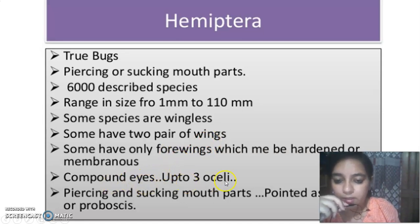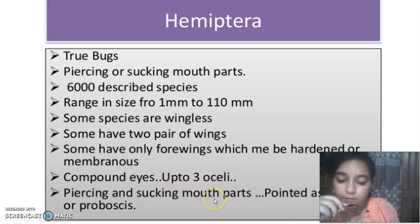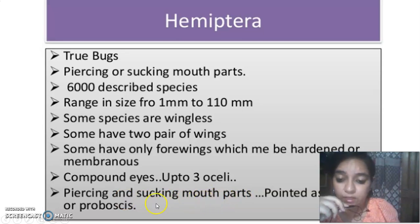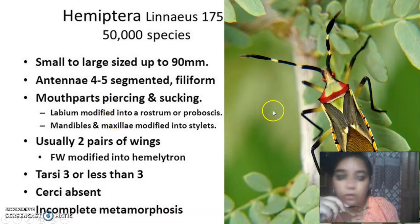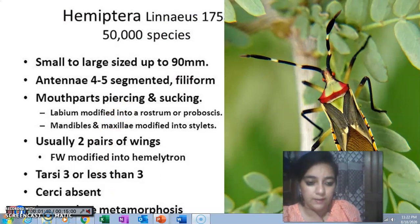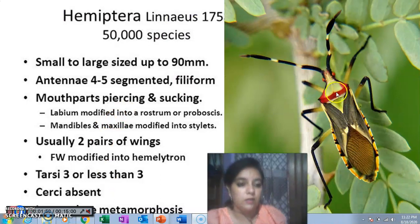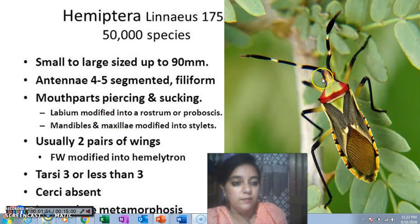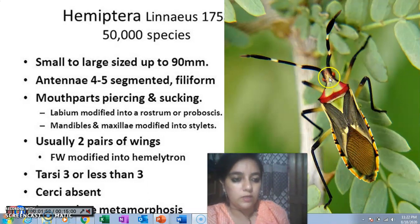Compound eyes are present, three ocelli are present, and piercing and sucking mouthparts are present. They have needle-like structures because they need to suck the sap of leaves. Looking at this figure, this is the true bug.